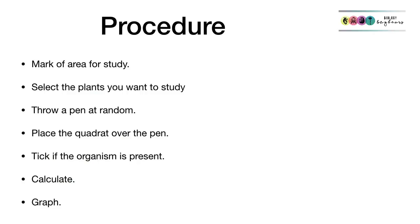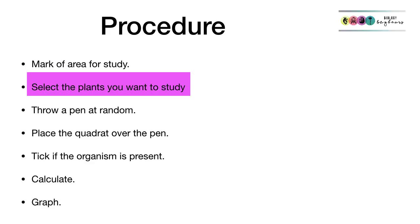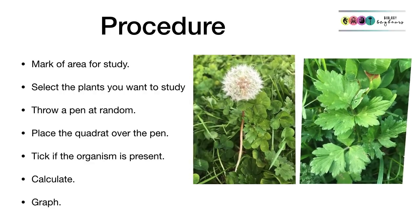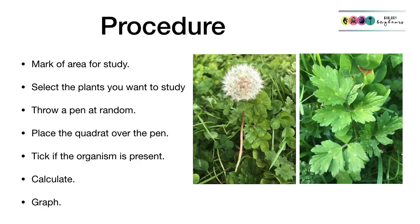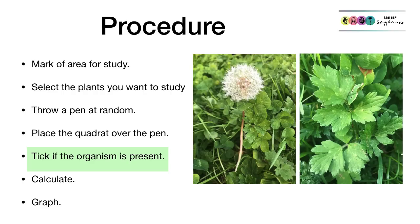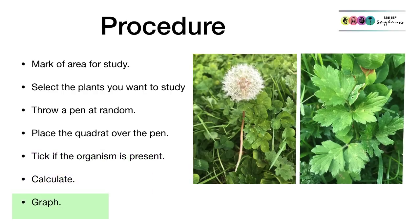To determine the frequency of a named species: firstly, mark the area for study. Select the species you want to study — for example, dandelion or creeping buttercup. Throw a pen at random, usually over your shoulder, to avoid bias. Place the quadrat gently over wherever the pen has landed. Tick if the organism is present in your table. Then calculate and graph your results.